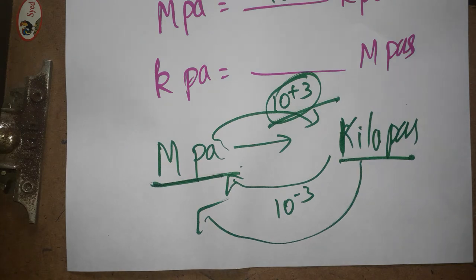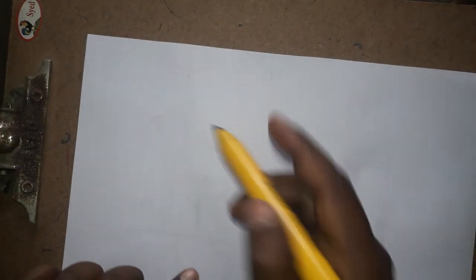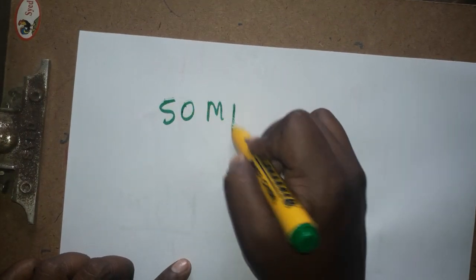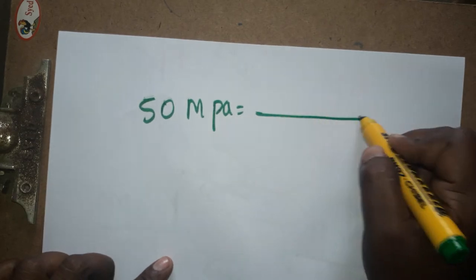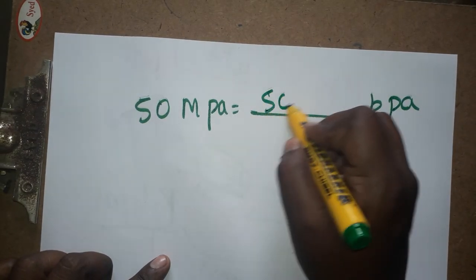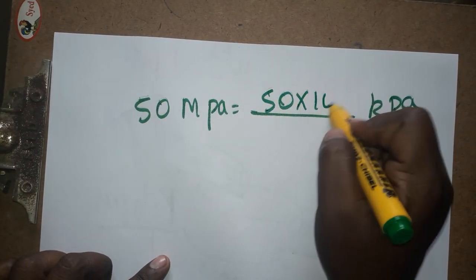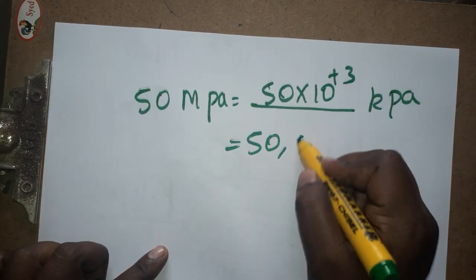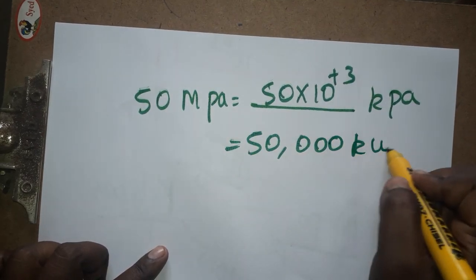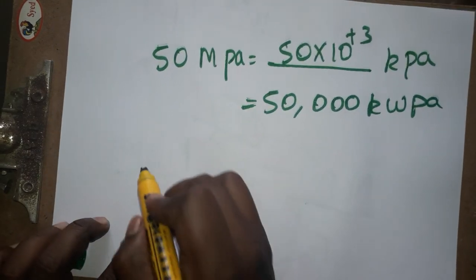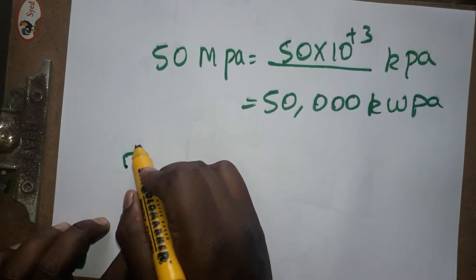Now for examples. Convert 50 megapascals to kilopascals: 50 × 10³ = 50,000 kilopascals.